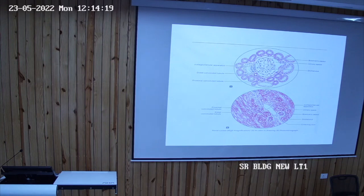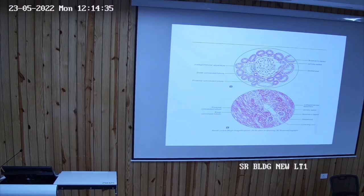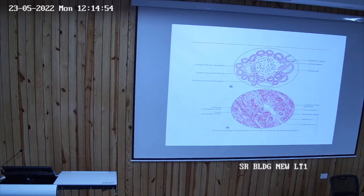The function of the proximal convoluted tubules: they help in filtration and also in the absorption of glucose, amino acids, sodium, chloride, and phosphate. The function of the renal corpuscle is filtration, and PCT helps in the absorption of sodium, amino acids, glucose, chloride, carbon, and phosphates.